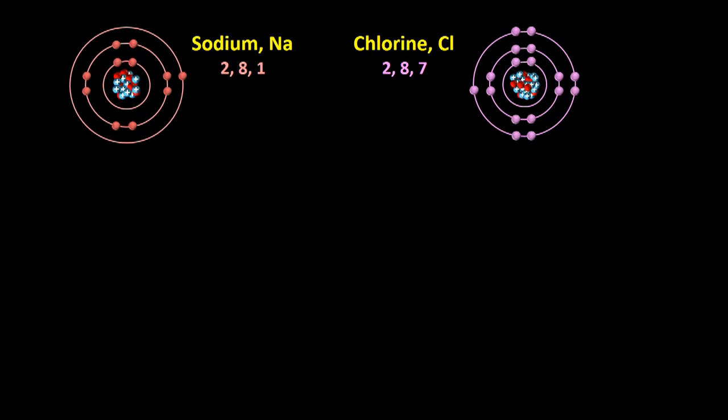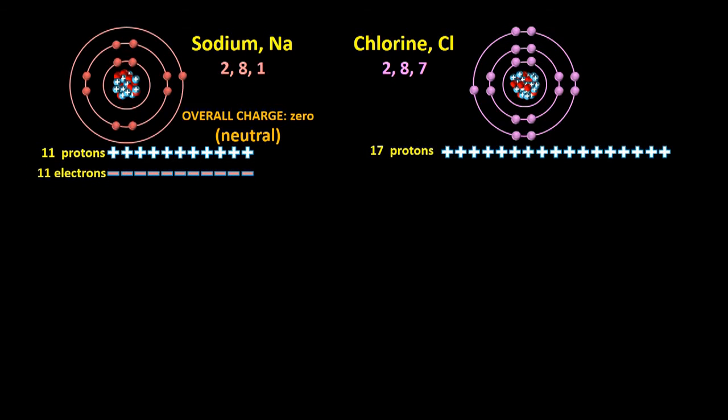An Na atom has 11 positively charged protons and 11 negatively charged electrons, so overall it's neutral, since the number of positive charges is equal to the number of negative charges. A Cl atom has 17 positively charged protons and 17 negatively charged electrons, so it's neutral too. Now what happens when sodium reacts with chlorine?